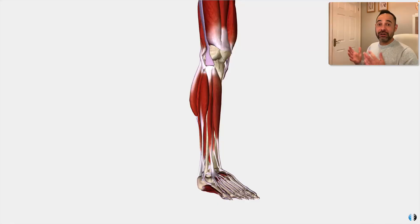Hey guys, Khaled here. Welcome back to Clinical Physio. When we're talking about chronic ankle instability, we're most commonly talking about recurrent injuries to the lateral ankle ligaments. Let's take a quick refresh of that with our 3D anatomy model.